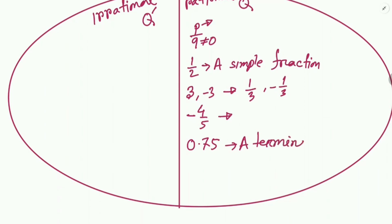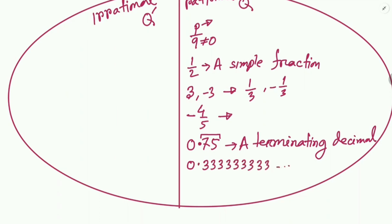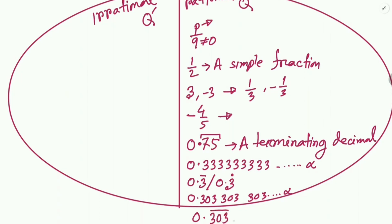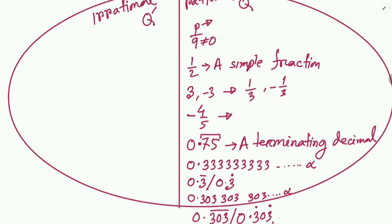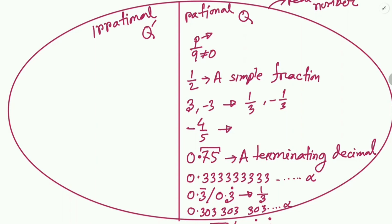Consider 0.75 — this is called a terminating decimal. That means after the decimal point, if we have a limited or finite number of digits, it is called a terminating decimal. All terminating decimals are rational numbers. If a number has infinite or repeating decimals — like 0.3̄ or 0.303303303... — this can be written as 0.303 with a bar above all three digits. These repeating decimals can be expressed as p/q, like 1/3, so repeating decimals are also rational numbers.